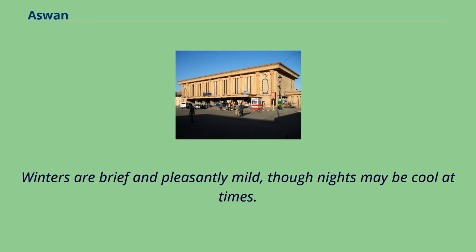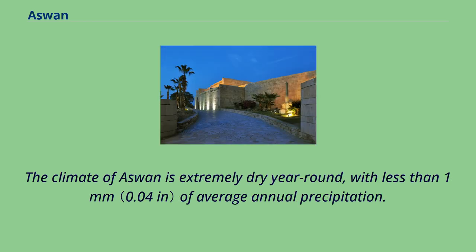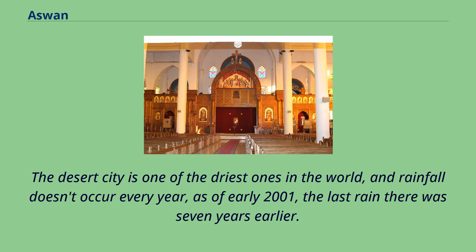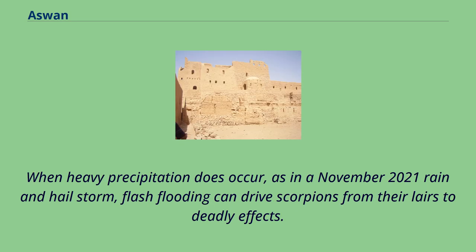The climate of Aswan is extremely dry year-round, with less than 1 mm of average annual precipitation. The desert city is one of the driest in the world, and rainfall doesn't occur every year — as of early 2001, the last rain there was seven years earlier. When heavy precipitation does occur, as in the November 2021 rain and hail storm, flash flooding can drive scorpions from their lairs to deadly effect.